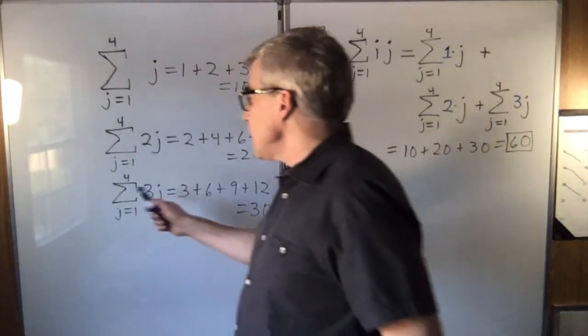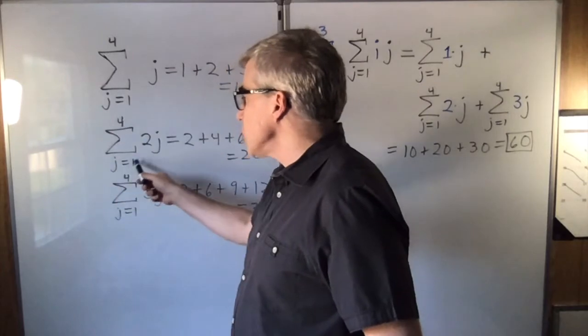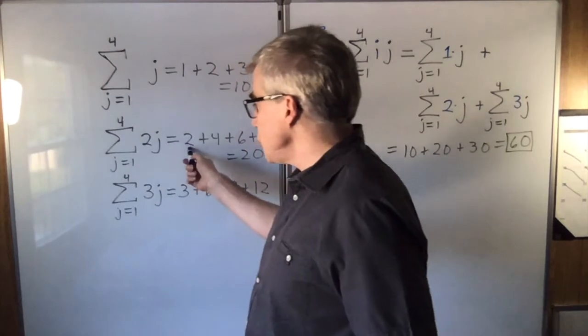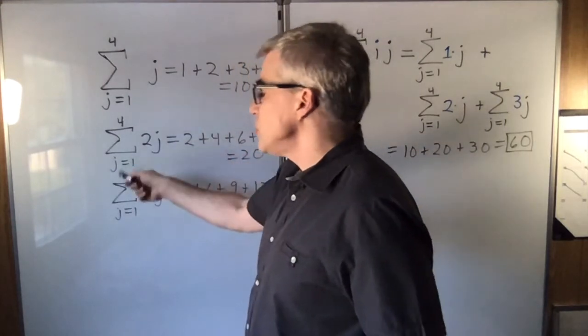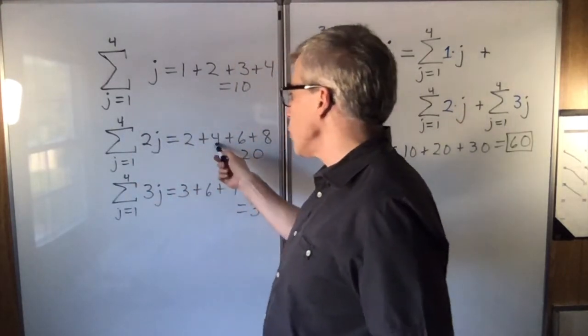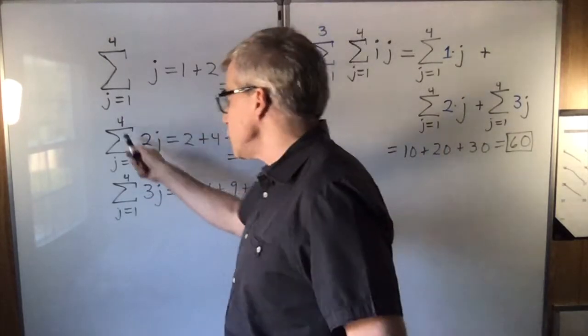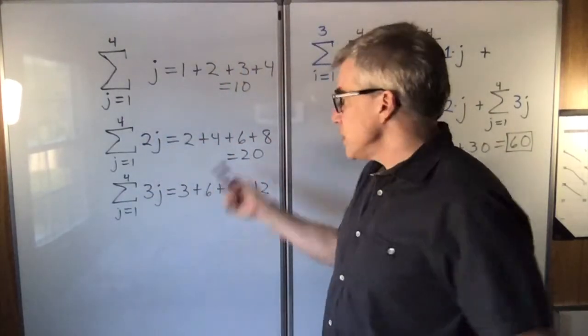Now suppose instead you had the sum from j equals 1 to 4 of 2j. So when j is 1, 2j is 2. Plus when j is 2, 2j is 4. Plus when j is 3, it's 6. Plus when j is 4, it's 8. And you get a total of 20.